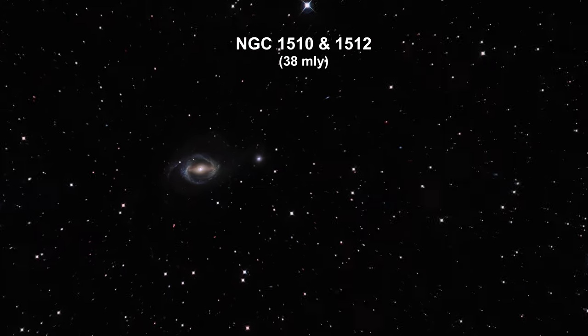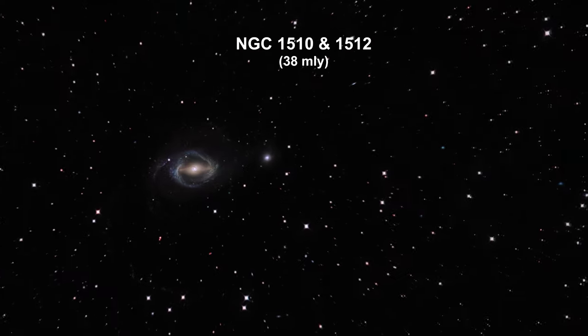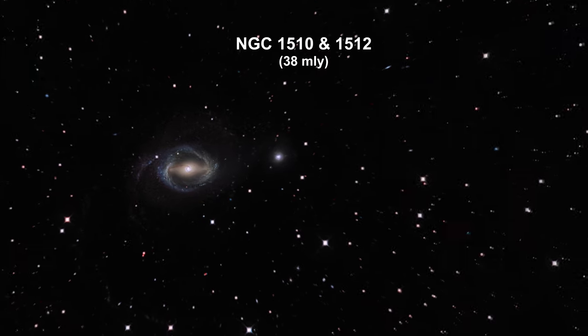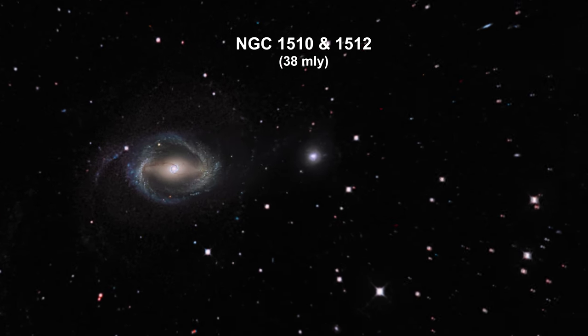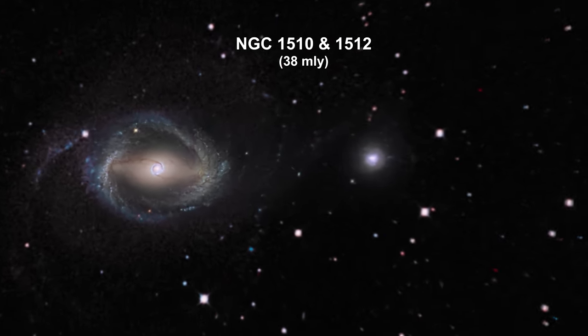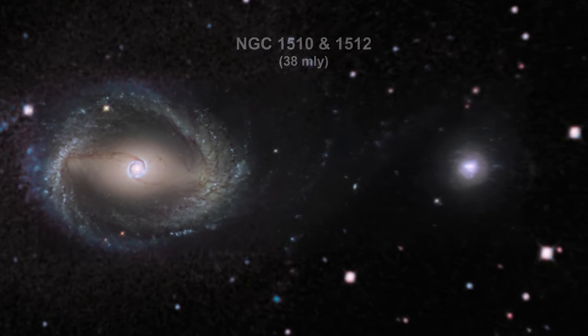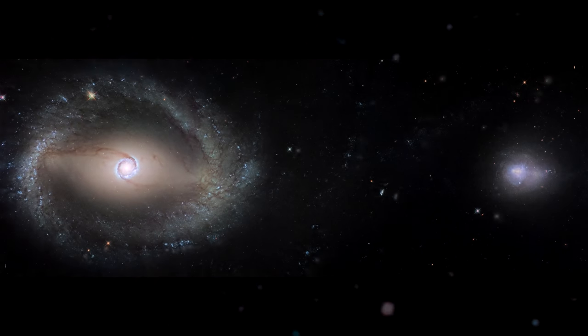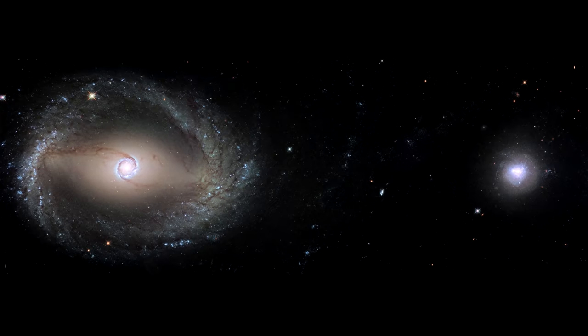Here we're zooming into tiny galaxy NGC 1510 and its colossal neighbor, NGC 1512. The large galaxy to the left in this image is classified as a barred spiral. The tiny galaxy to the right is a dwarf galaxy.